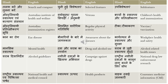'Is vastu mein ye visheshtayen hai' means this item has these particular features. 'Upa visheshtayen' means subfeature. 'Australiai swasthya evam kalyan sansthan' means Australian Institute of Health and Welfare — 'kalyan' is welfare and 'sansthan' is institute.